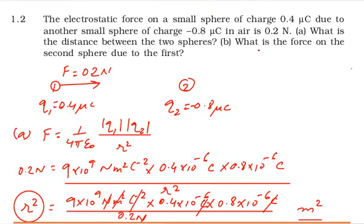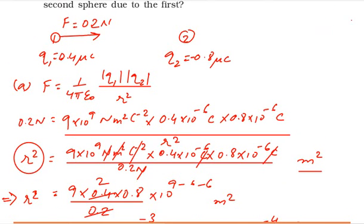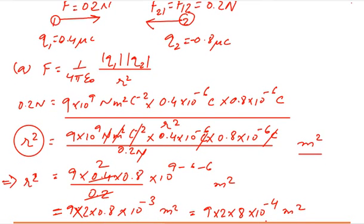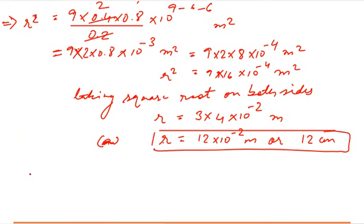Part b asks for the force on the second sphere due to the first. By Newton's third law, the force on sphere one due to sphere two is equal in magnitude to the force on sphere two due to sphere one. So the force on sphere two due to sphere one has the same magnitude of 0.2 Newton, just in the opposite direction. Coulomb's law also confirms this — the interaction force is equal in magnitude but opposite in direction.